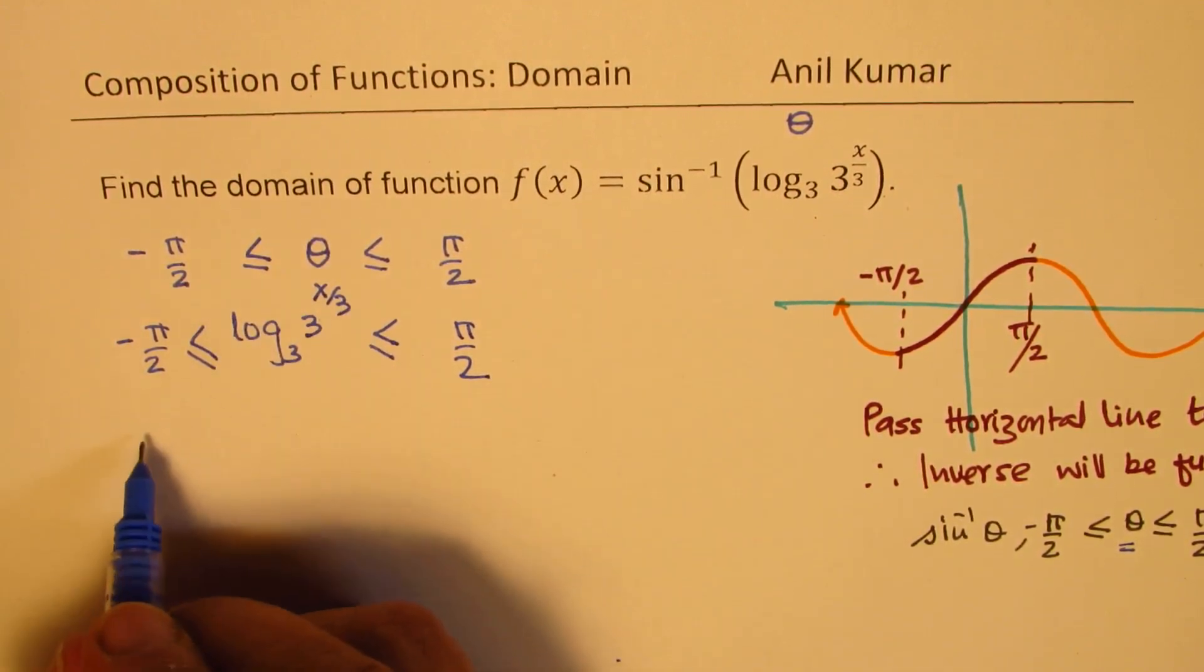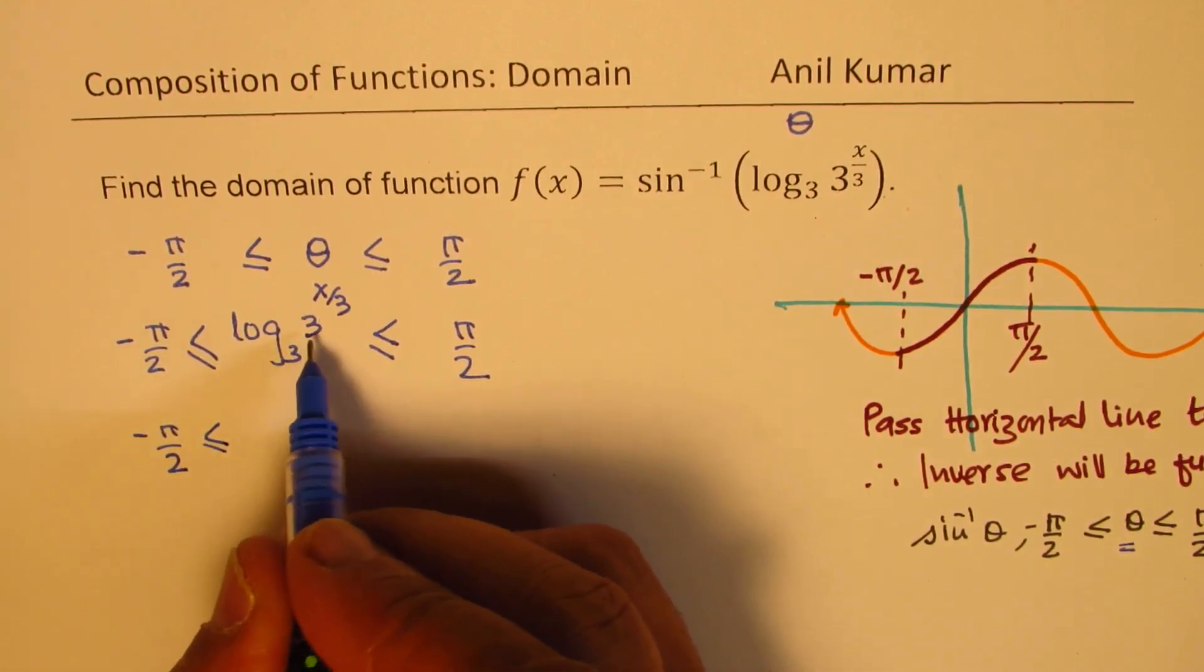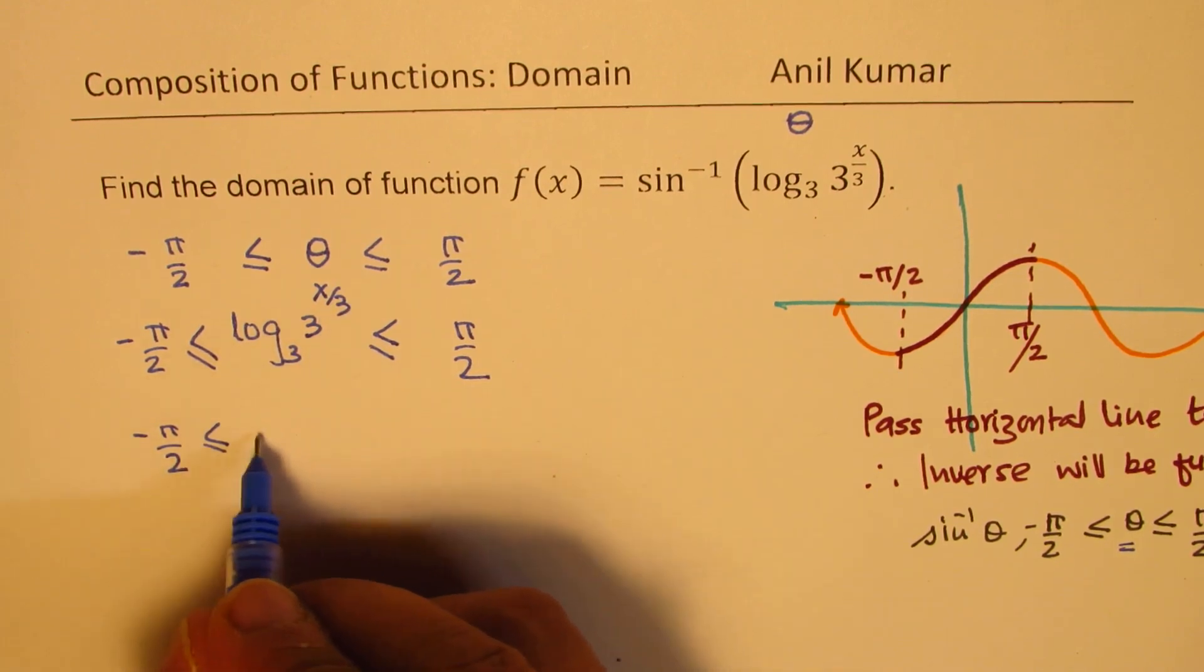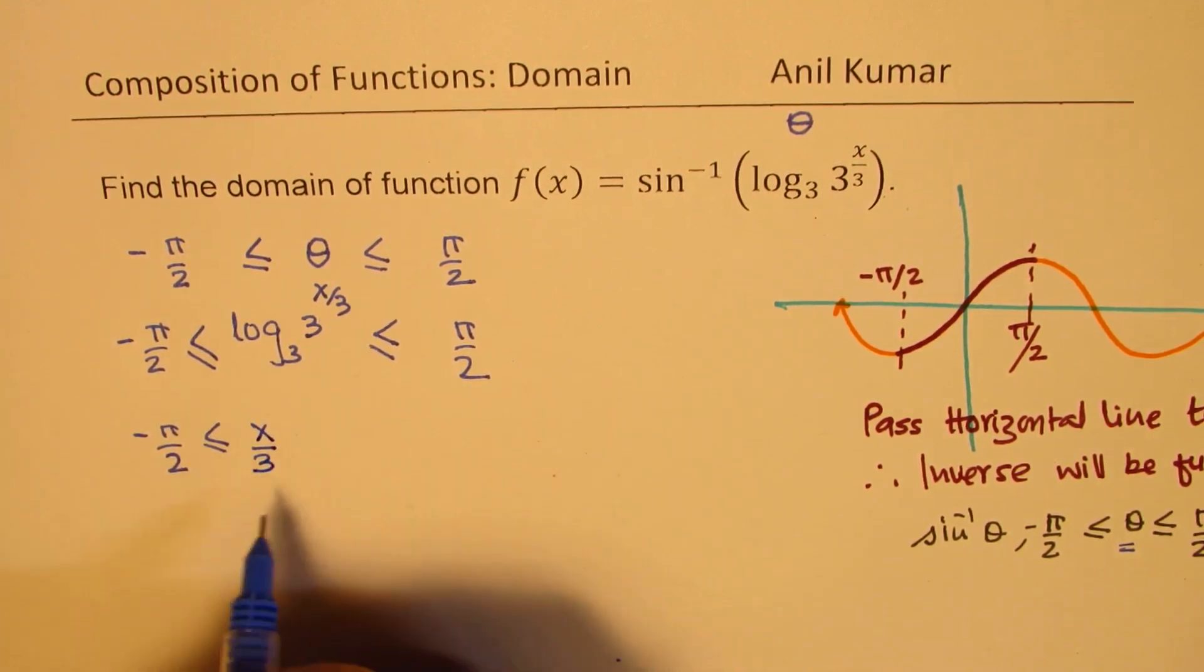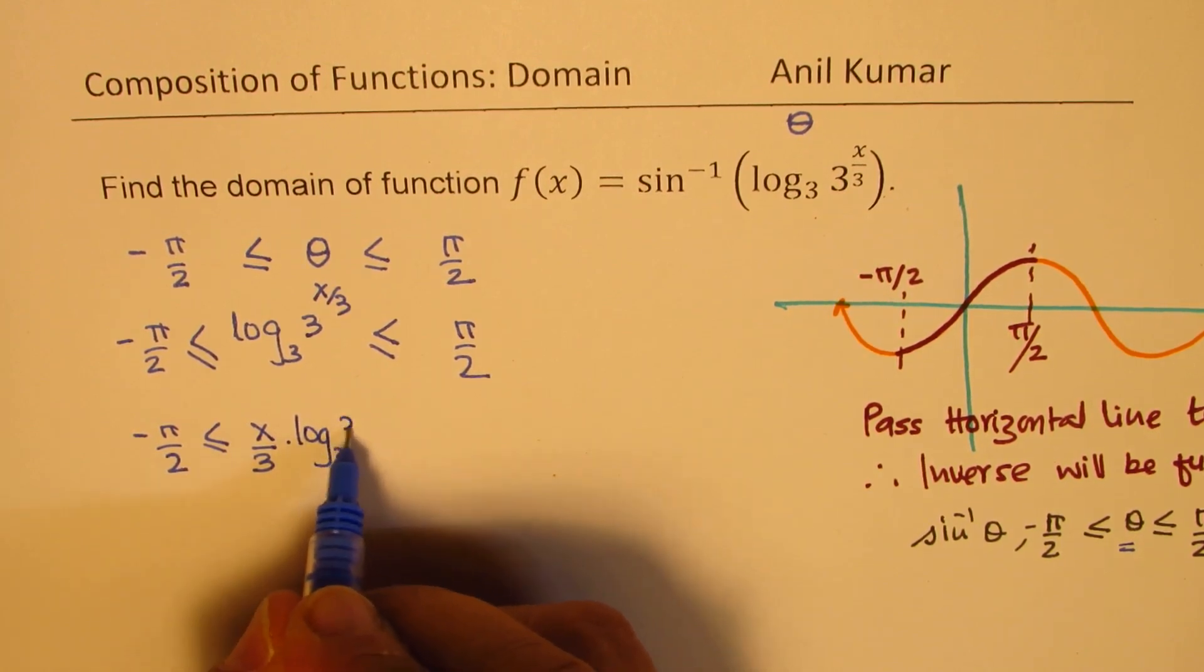Now what is this log equal to? Log to the base 3 of 3 is 1. And therefore, it is equal to x by 3. So we'll go one more step. We can write this as x by 3 times log to the base 3 of 3.